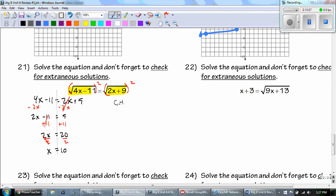And don't forget, you have to check it. 4 times 10 minus 11, which is 40 minus 11, which is 29, right? And then the other side, 2 times 10 plus 9, which is 20 plus 9, which is 29. So, yay! It works. x equals 10 is our answer.